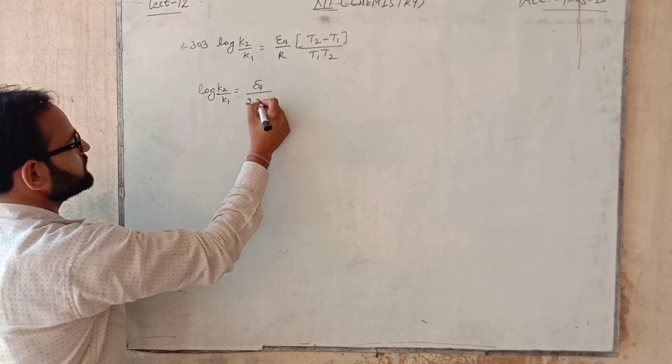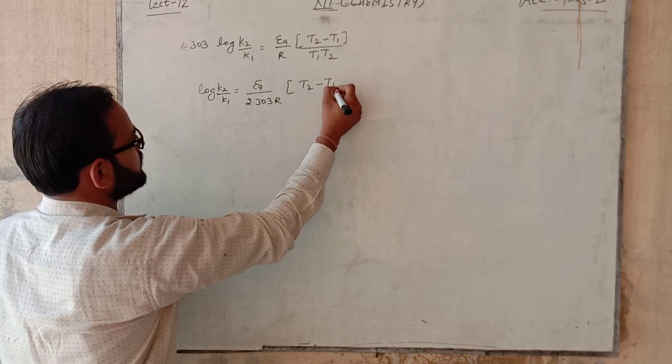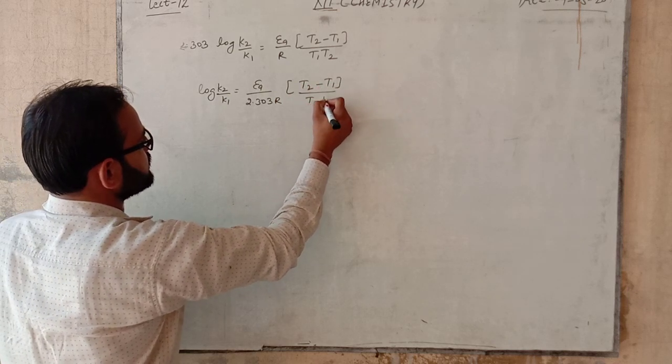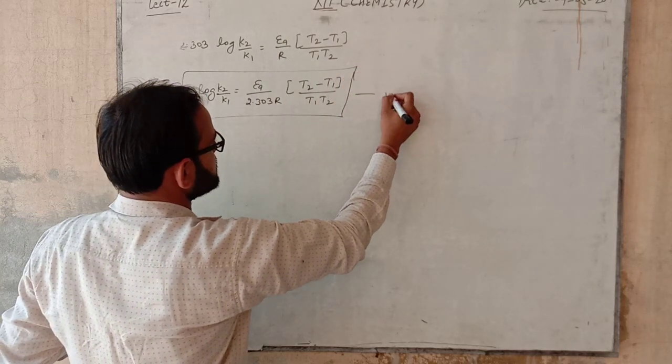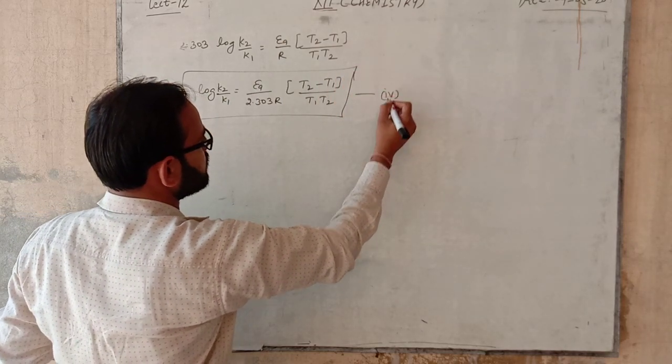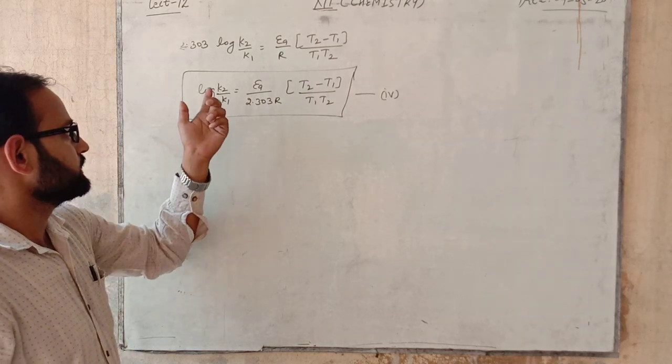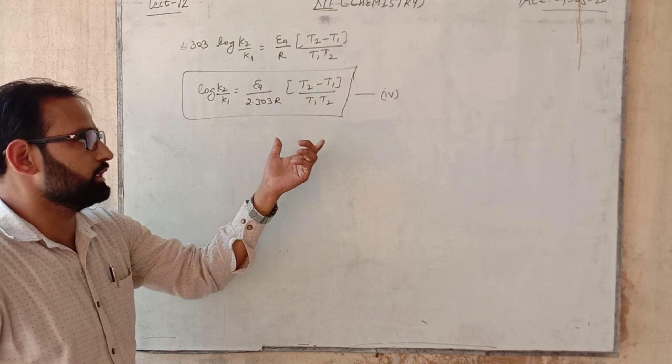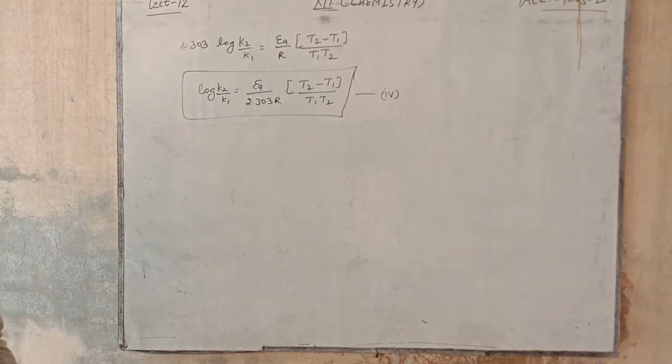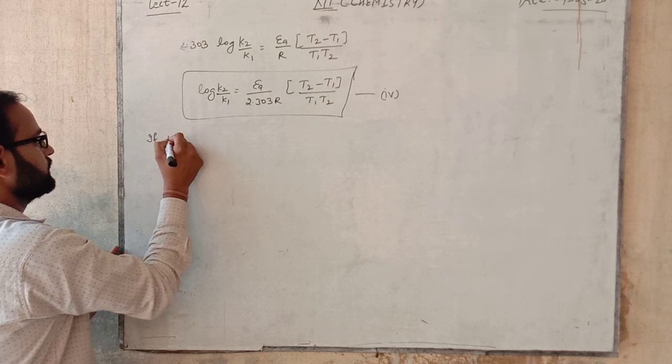This is our final equation, that is equation number 4, for relation between k2, k1 and T1, T2 for the different temperatures. Dear students, if we again consider equation first...